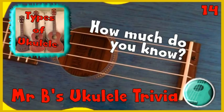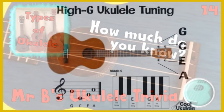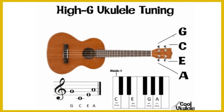This week's One Minute Ukulele Trivia is all about how many different types of ukulele there are. A ukulele is different to a guitar as it only has four strings compared to the six strings on a guitar.